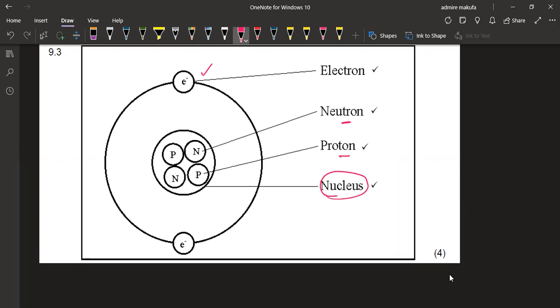It consists of the protons and the neutrons, where the protons are positively charged. And this neutron, they've got no charge. So they've got no charge here. And the electron, they are negatively charged. So that is the diagram. And they've got four marks just for that.